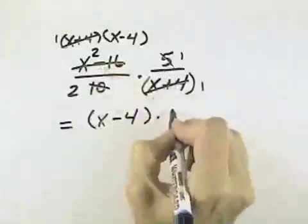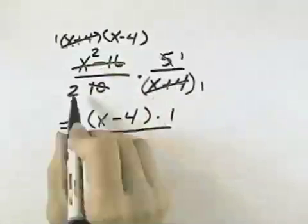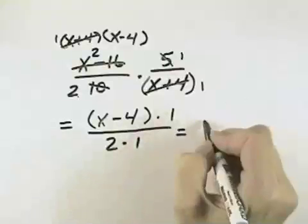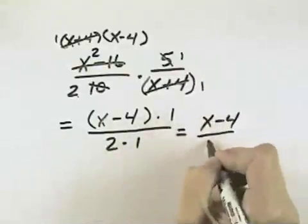Times the 1 from our second numerator. In the denominator, we have a 2 from our first denominator times the 1 from the second one. But we don't need those 1s, so we would express our answer as x minus 4 over 2.